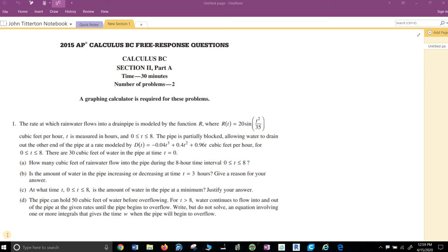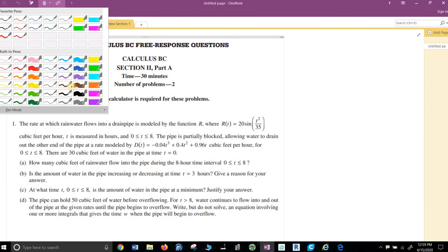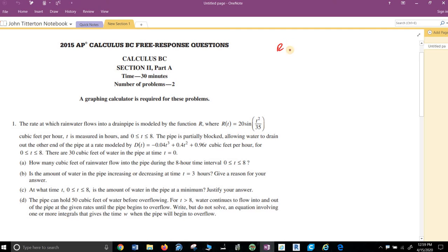The rate at which rainwater flows into a drainpipe is modeled by the function R of T. And I put R of T immediately into my calculator. So my R of T I put in as Y1, and then my D of T I put in as Y2. I changed mode to radian and made sure it was in function.